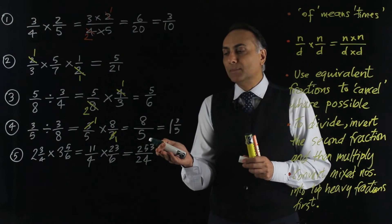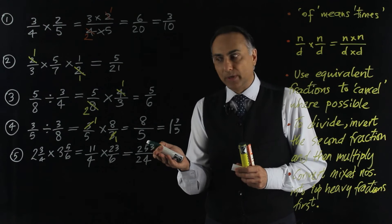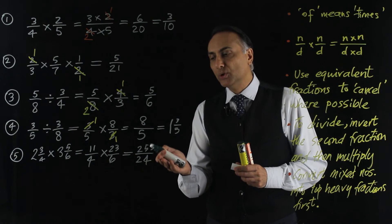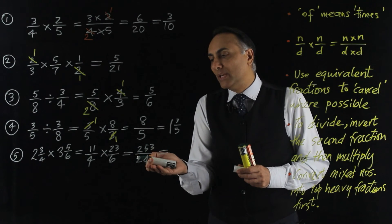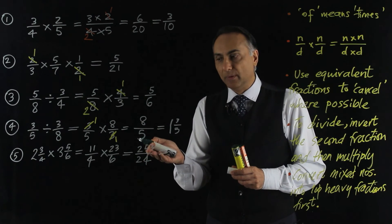And the denominator 4 times 6 is 24. And the answer comes out as a top-heavy fraction or an improper fraction. So what we should do is convert it into a mixed number. So it's how many 24s go into 253. Well.